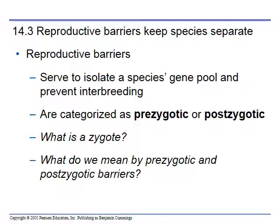We categorize reproductive barriers as prezygotic and postzygotic. A zygote is the embryo — that's when we've fertilized the egg. Anything prezygotic is before mating even occurs — it could be geographical, where they can't reach each other. Postzygotic is like the mule example, where mating has occurred and the egg and sperm meet and produce something, but it's not fertile and can't reproduce.